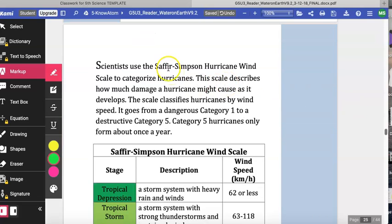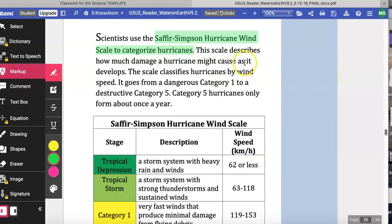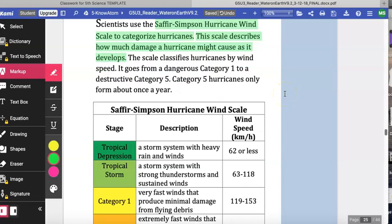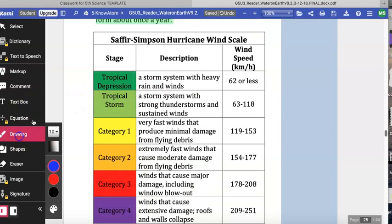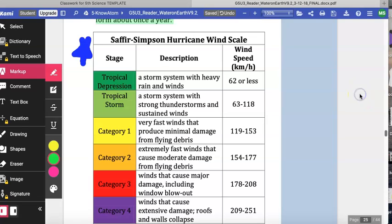Scientists use the Saffir-Simpson hurricane wind scale to categorize hurricanes. This scale describes how much damage a hurricane might cause as it develops. The scale classifies hurricanes by wind speed. It goes from a dangerous Category 1 to a destructive Category 5. Category 5 hurricanes only form about once a year. I do need you to make sure you star this diagram and chart so that you have it ready for your next lab activity.